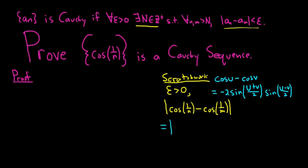So in this case, this is equal to absolute value of negative 2 sine. So our u is 1 over n and our v is 1 over m. So 1 over n plus 1 over m over 2, and then sine of 1 over n minus 1 over m over 2. So we've made some progress.